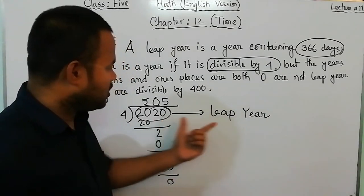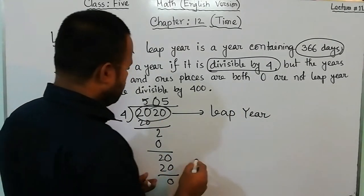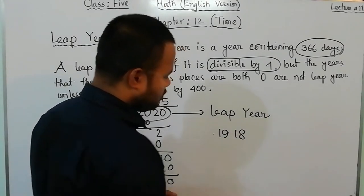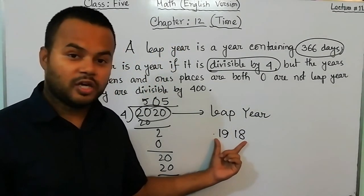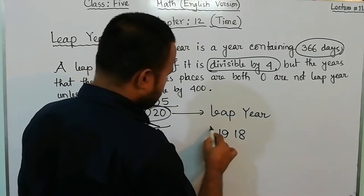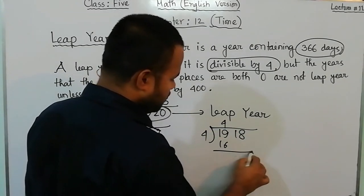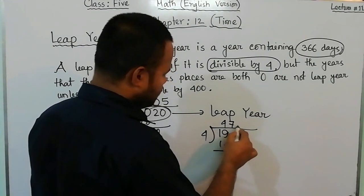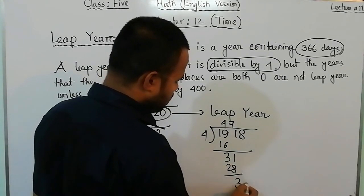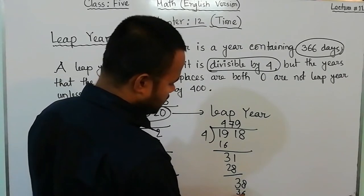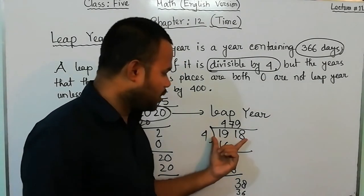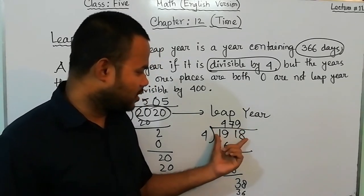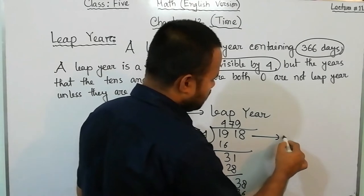Now let's check the year 1918. If we divide 1918 by 4, we get a remainder — 1918 is not exactly divisible by 4. So we can say that the year 1918 is not a leap year.